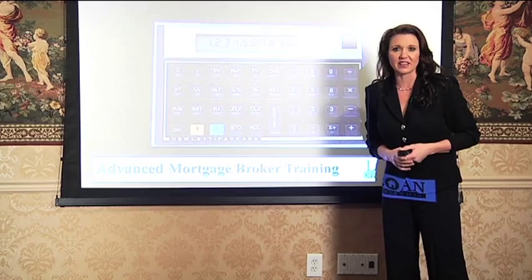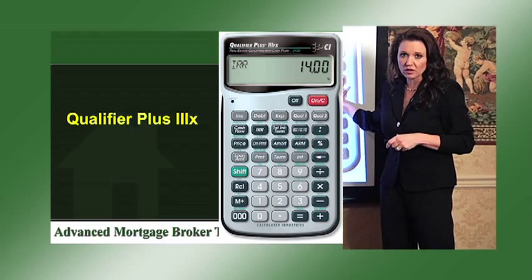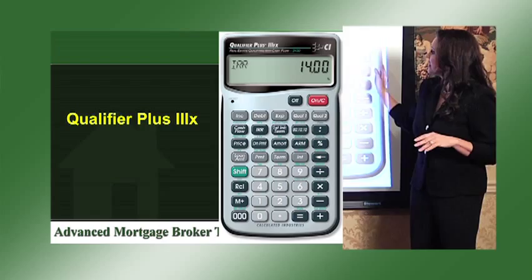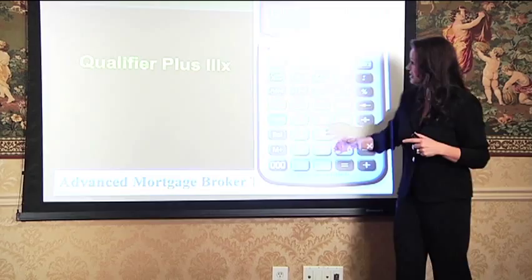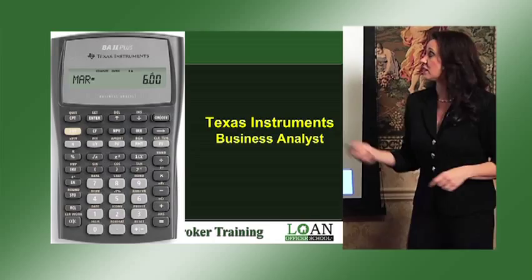Now this is your Qualifier 3X. Any type of the qualifier calculators or basically any financial calculator from Calculated Industries is going to have most of the same functionalities. The one I really recommend is the Pocket Master — it's basically everything from here down. So it's simple, basic, but does everything you need.